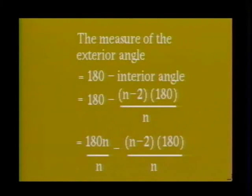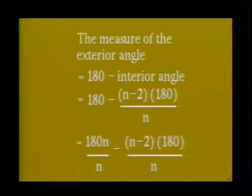The measure of each exterior angle of a regular polygon. We can also find the measure of each exterior angle of a regular polygon. Since an exterior angle is the supplement of an interior angle, we can write: the measure of the exterior angle equals 180 minus the measure of the interior angle.